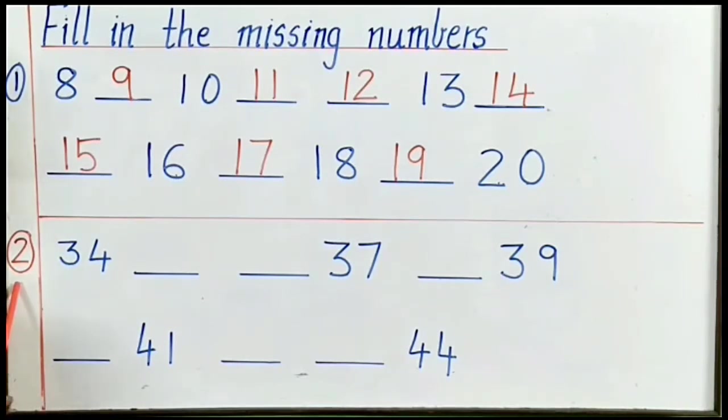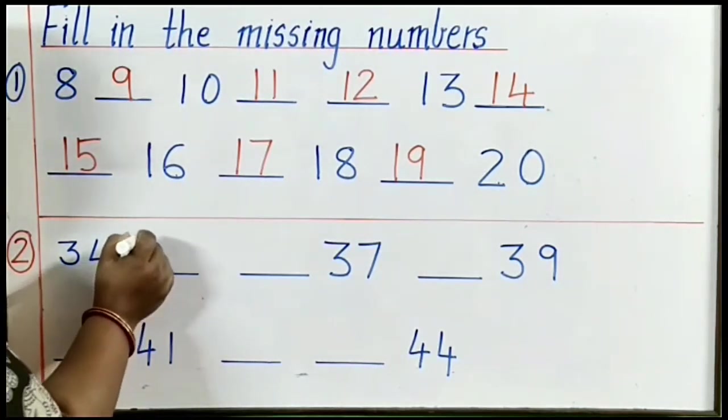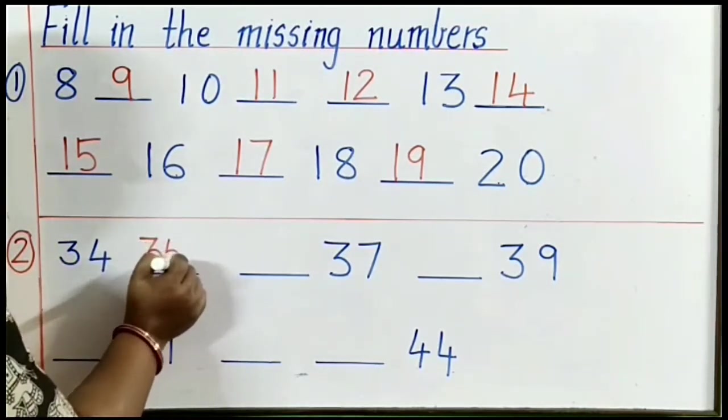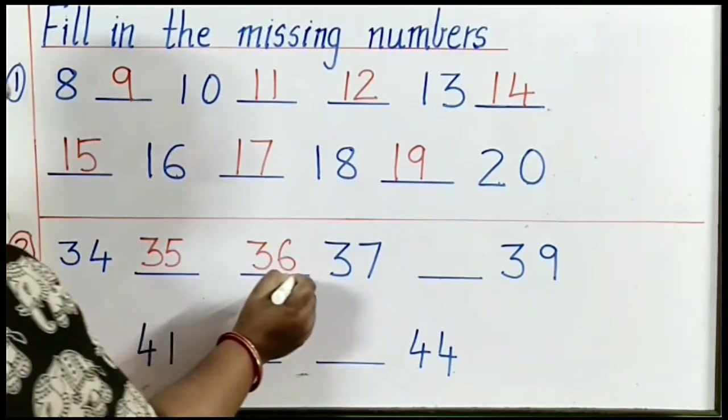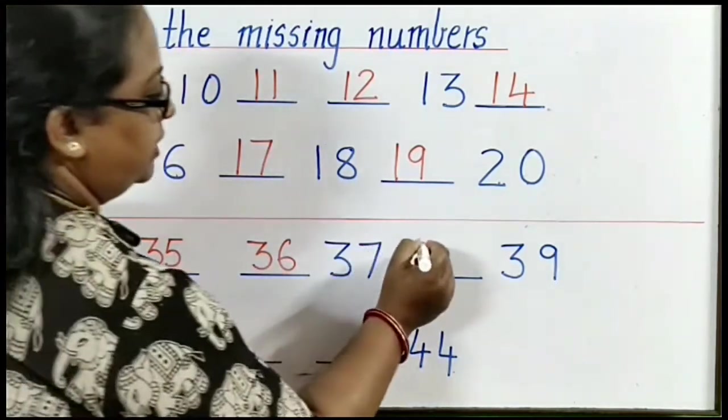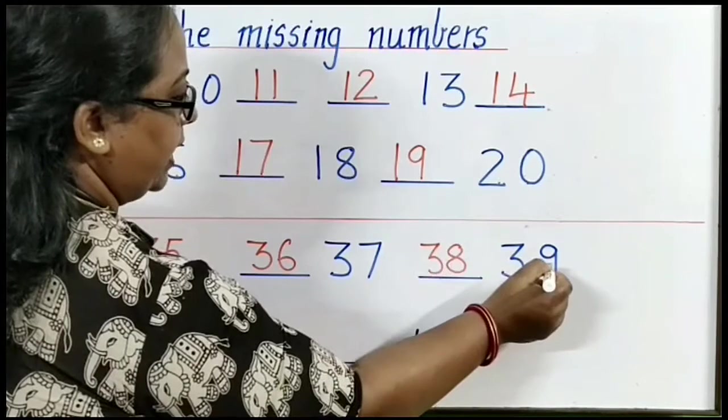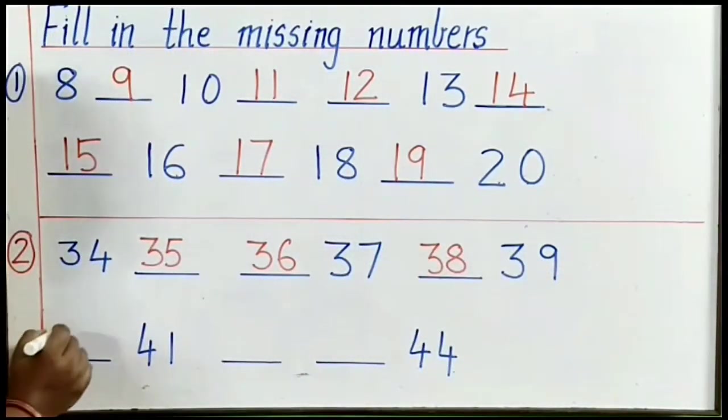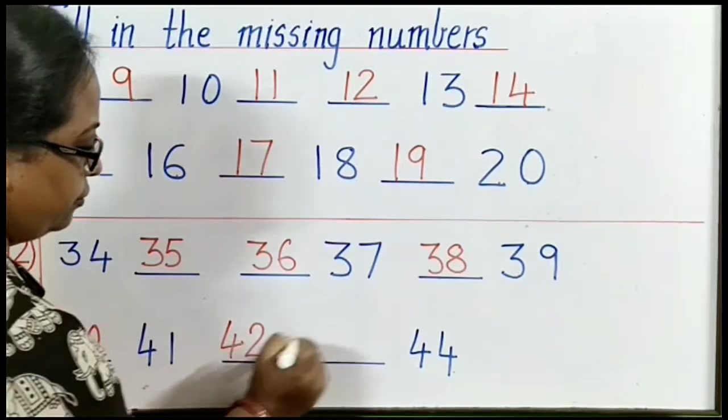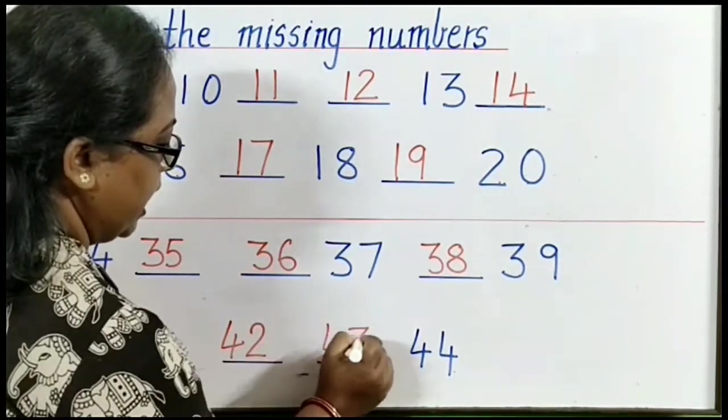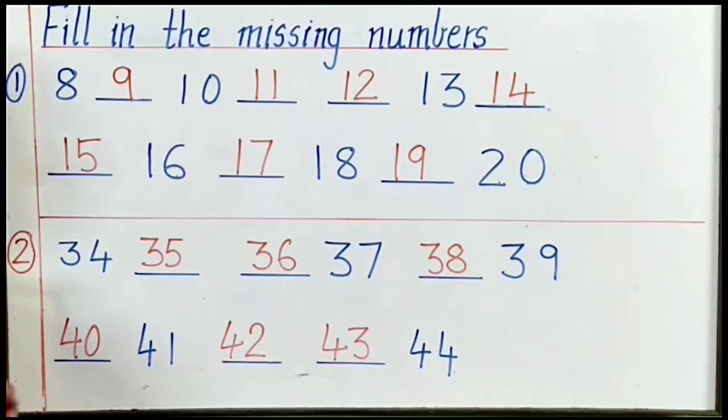Number 2. The first number is 34. After 34, yes, 35. After 35, 36. 36, 37, 38, 39. After 39, yes, 40. 40, 41, 42, 43, and 44. We have completed the exercise.